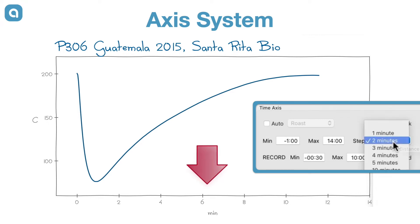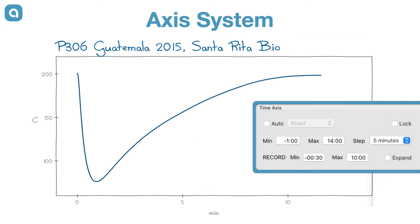If auto is not ticked, the auto time axis mode is disabled. This allows having custom limits defined per profile, which are saved along profiles and reset on load if 'load from profile' is ticked. In some situations it makes sense to lock the time axis to a certain range, such that the stored axis settings on loading a series of profiles do not alter them. This can make separate profile printouts easier to compare.